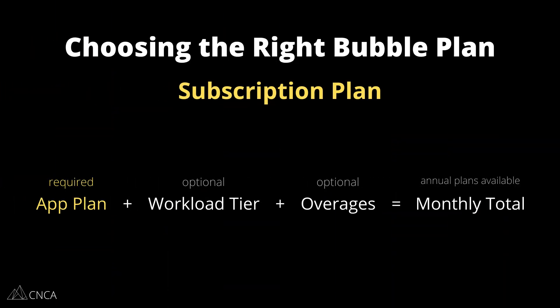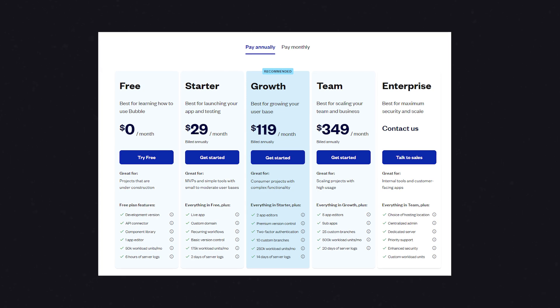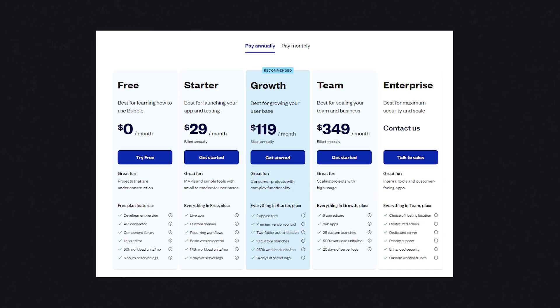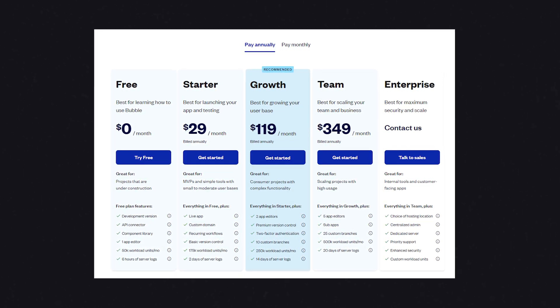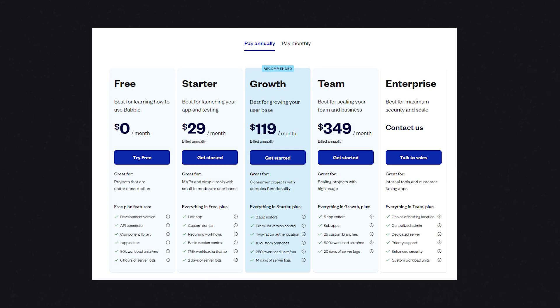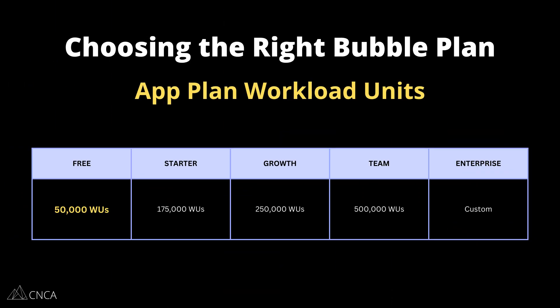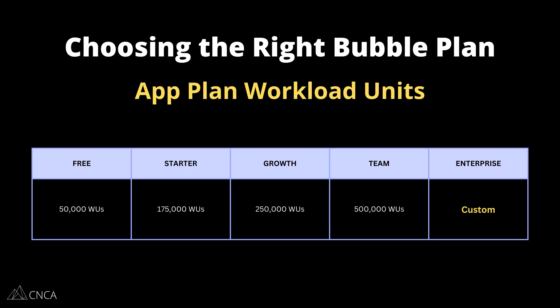The first component is the app plan. This is the only required part, and it may be the only thing that you need for your application to cover everything. The app plan is what actually gets you access to the editor, and Bubble has several levels of app plans, starting from a free plan to a few different levels of paid options. Every app plan also comes with a certain amount of workload units that you can use throughout the month — this is how Bubble tracks your app's activity, and the higher you are in those plans, the more units you get.